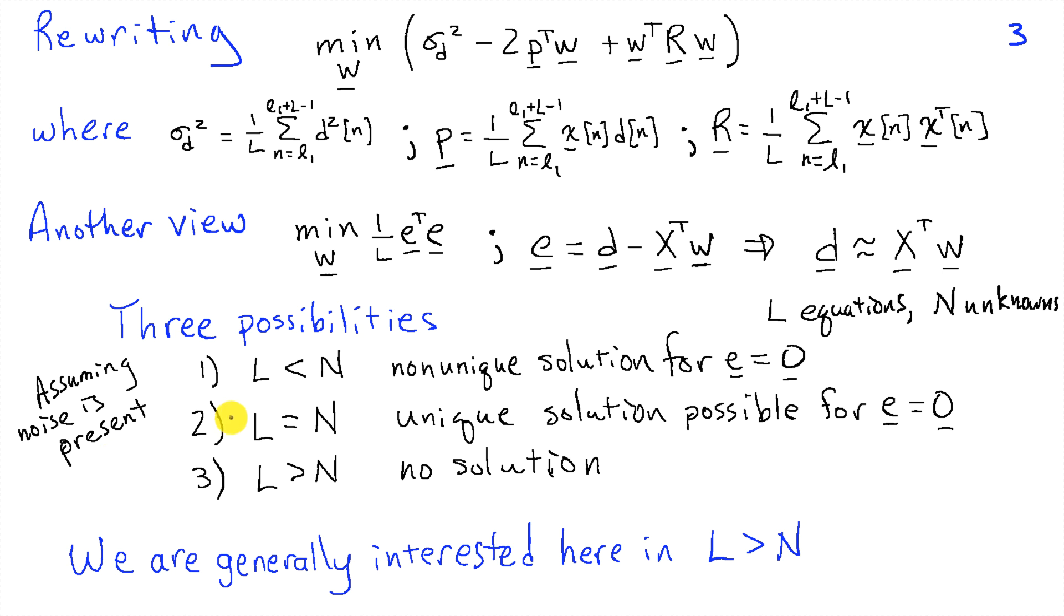There's basically three possibilities. And I'm going to view this from a signal processing perspective rather than a mathematician's or a linear algebraicist's perspective. I'm going to assume that noise is present. As a result, all the columns in X transpose are, in general, linearly independent. So if L is less than N, then we have fewer equations than we have unknowns. We can have many solutions that will give us E equals zero. Now, if L is equal to N, then there's a unique solution for W that achieves E equals zero.